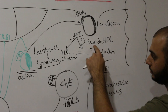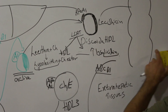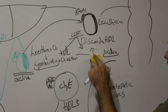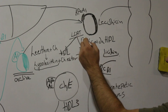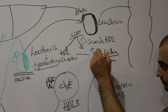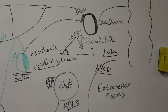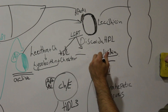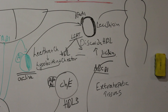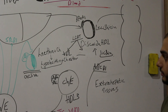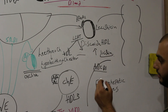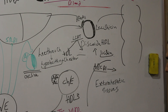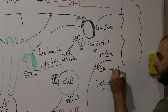In familial LCAT deficiency specifically, there will be a high content of lysolecithin in the blood. Because there is no LCAT function, lysolecithin is not formed and processed normally, so it accumulates to high levels. In an exam question, if the patient shows a high level of lysolecithin on lab testing, think about LCAT deficiency.